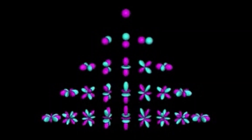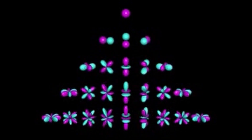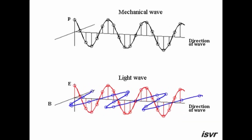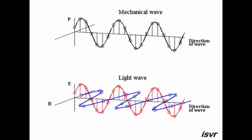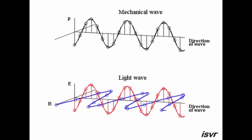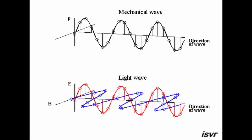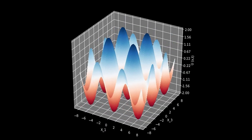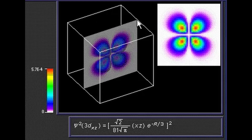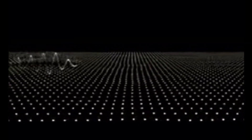Gauge symmetry is a fundamental concept in theoretical physics and plays a crucial role in the formulation of Yang-Mills theory. In this context, gauge symmetry refers to the fact that the physical properties of a system should not depend on the particular choice of gauge used to describe it. Put simply, gauge symmetry means that different descriptions of the same physical system can be related to each other by a transformation that leaves the physical properties unchanged. In Yang-Mills theory, gauge symmetry refers specifically to the invariance of the theory under local gauge transformations.